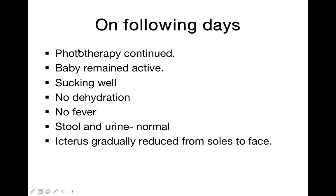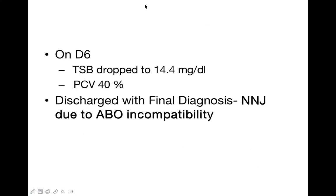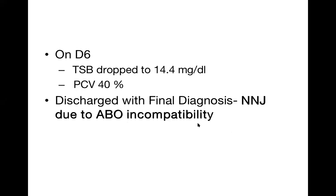With continued phototherapy, icterus gradually reduced from soles toward the face — a very good sign. By day six of hospital admission, TSB dropped to 14.4 mg/dL, and packed cell volume was 40%. The baby was discharged with a final diagnosis of ABO incompatibility: mother's blood group was O positive, baby's was A positive — they didn't match, hence ABO incompatibility, which caused the neonatal jaundice.